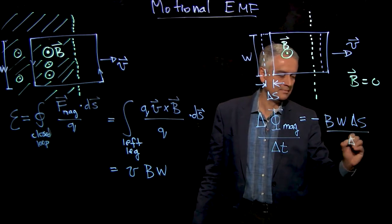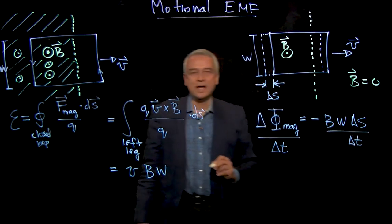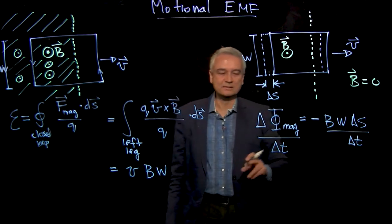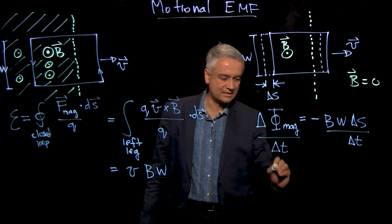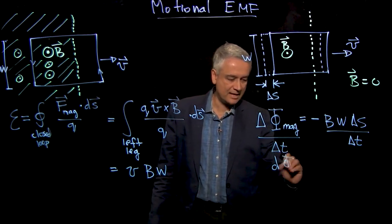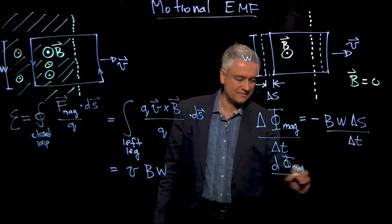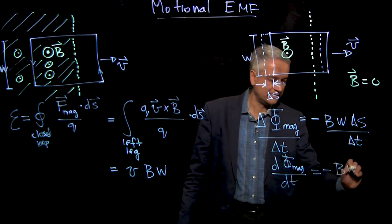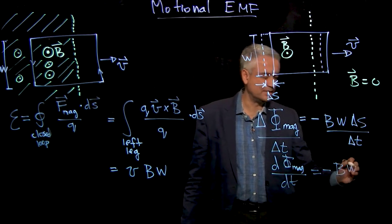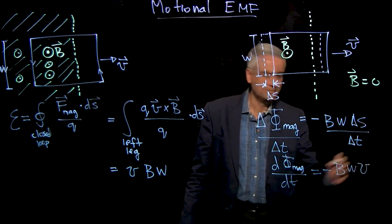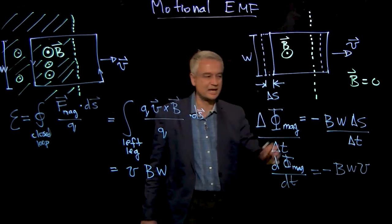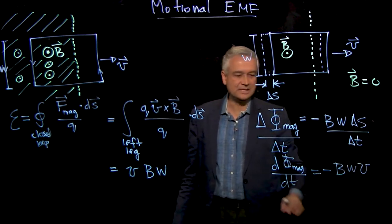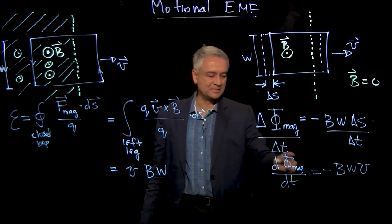And I now do physicists calculus. I take Delta Phi over Delta T and I write that as dΦ_magnetic/dt equals minus B W Delta S over Delta T. I write as V using physicists calculus, taking my Delta S's and Delta T's and making them infinitesimally small. Delta S over Delta T becomes V, Delta Phi over Delta T becomes dΦ/dt.